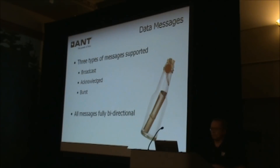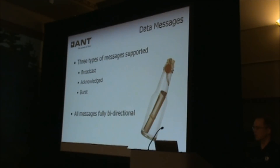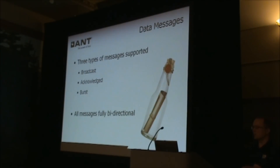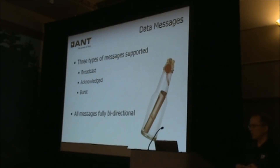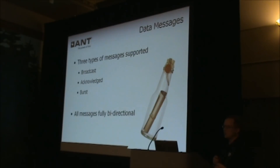The whole point of wireless links and ANT channels is to transport data. ANT supports three types of data: broadcast, acknowledged, and burst. All these message types are fully bi-directional, so for each message type the master can send to the slave, the slave can also send back to the master.